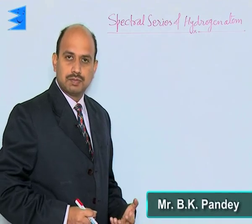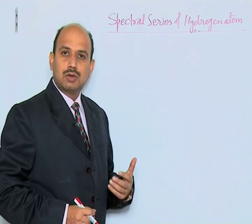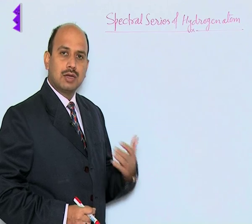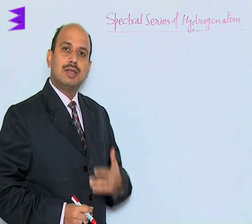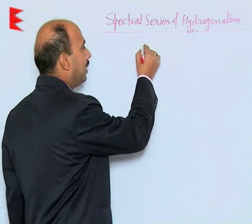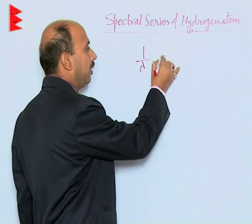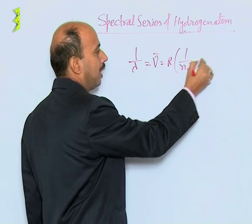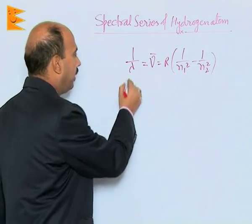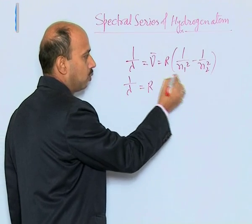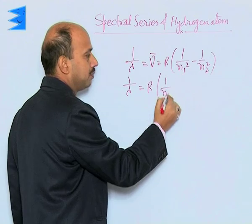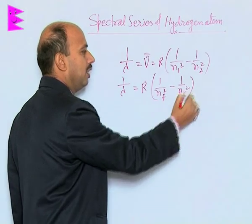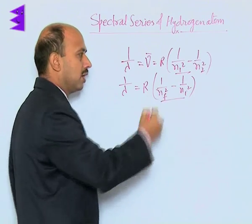Now, we will see the spectral series of the hydrogen atom. We have done the total energy of the electrons in the orbit, and now the ground state and excited state of the hydrogen atom. The electrons in the ground state and excited state have different energies. We have derived this formula: 1 upon lambda, also called wave number, is equal to R into 1 upon n1 square minus 1 upon n2 square, where n1 is the initial state and n2 is the final state.